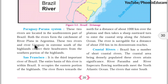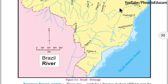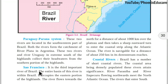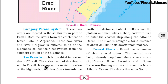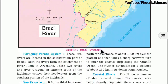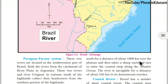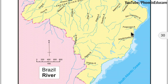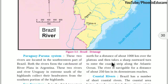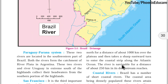San Francisco river is the only river in Brazil that is completely flowing within Brazil — the entire basin of the river is within Brazil. It occupies the eastern position of the highland and flows towards the north for about one thousand kilometers. Then it takes a sharp eastward turn to enter the coastal strip along the Atlantic Ocean. The river is navigable for a distance of 250 kilometers.